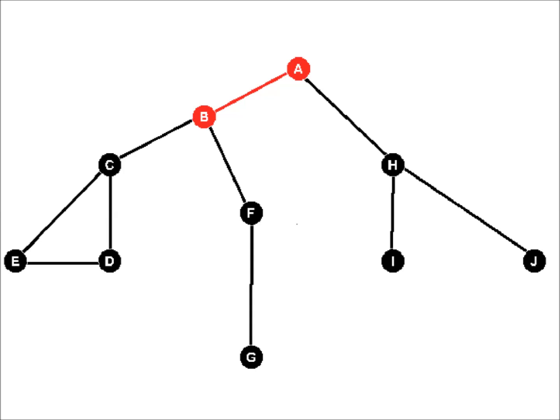From B, we can reach C or F. We go to C. From C, we can reach D or E. We go to D. And from D, we can reach E.